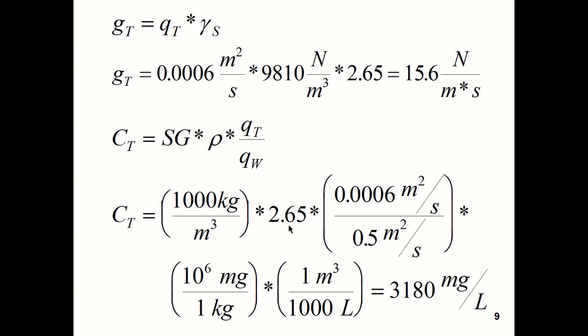So you can see there's density of water, specific gravity of the sediment, volumetric sediment flow rate, water flow rate per unit width, units conversion factor, another units conversion factor. So the concentration of the total sediment load is 3,180 milligrams per liter.